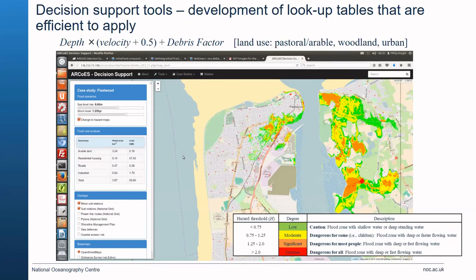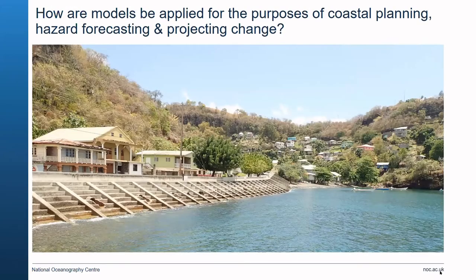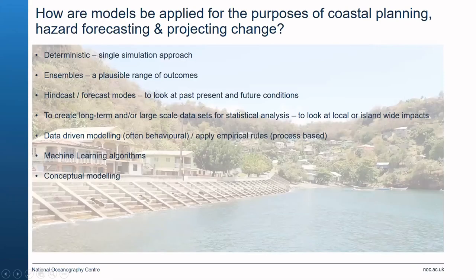How are models actually used for planning, hazard forecasting, and projecting change? This example of a coastal sea wall shows the many ways a model can be used — in design, monitoring changing conditions, or giving an alert when defence inspection or maintenance is required. Models can be run as a single deterministic simulation or in ensembles with many different model scenarios or parameter settings to create a range of plausible outcomes. They can be run in hindcast mode to understand past events or in forecast mode to look at present and future conditions.